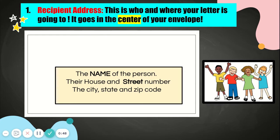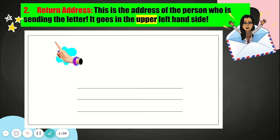You need to know the person's name, their house and street number, and the city, state, and zip code of where they live. This is called the recipient address. Without this, your friend or family member cannot get your letter friends.